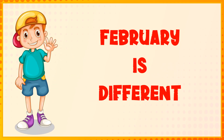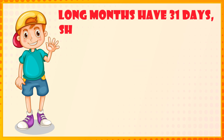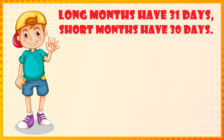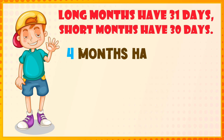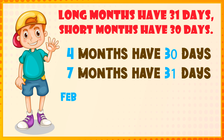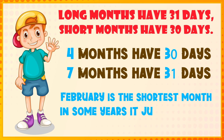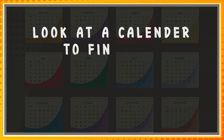February is different. Long months have 31 days, short months have 30 days. 4 months have 30 days, 7 months have 31. February is the shortest month — in some years it jumps for fun. Look at a calendar to find out.